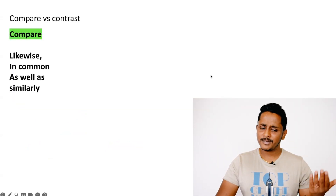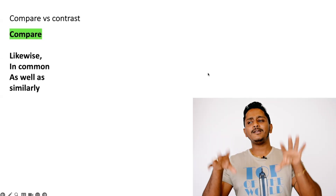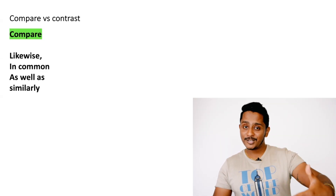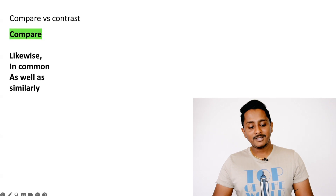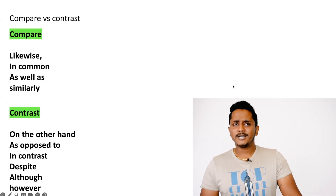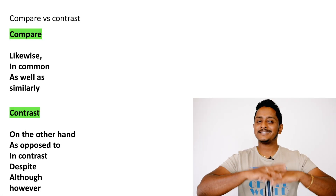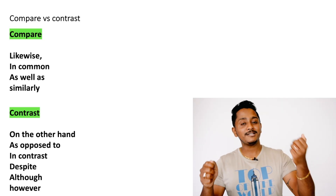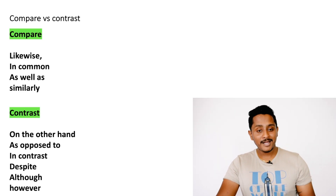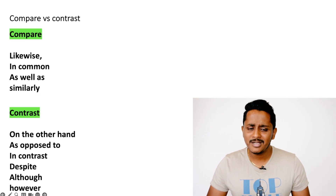Let's add some sentences to help you understand more about compare and contrast. If you're writing an essay and you have to compare two different things, you are trying to find similarities — you'd use words like 'likewise,' 'in common,' 'as well as,' or 'similarly.' But if you're contrasting them, you are trying to find a difference, and you'd use phrases like 'on the other hand,' 'as opposed to,' 'in contrast,' 'despite,' 'however,' 'although,' or 'but.'